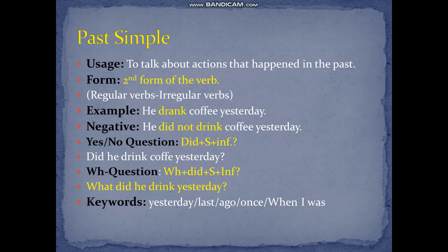We also studied the past simple tense, which we use to talk about actions that happened in the past. For the form of the past simple, we get the second form of the verb. We have two types of verbs: